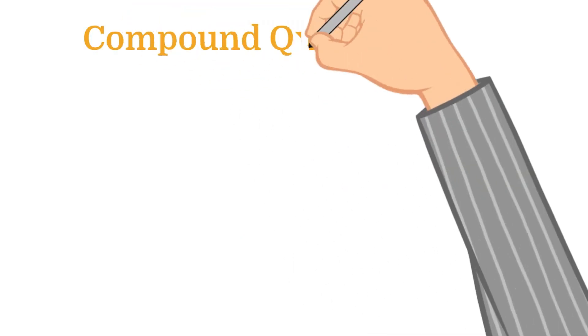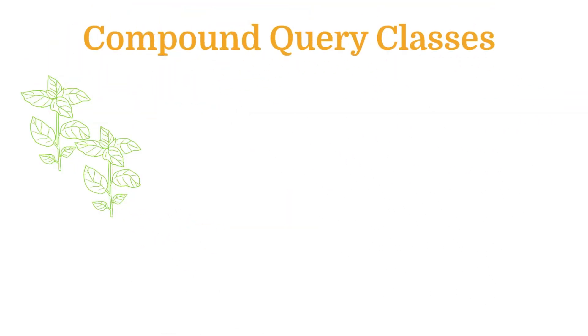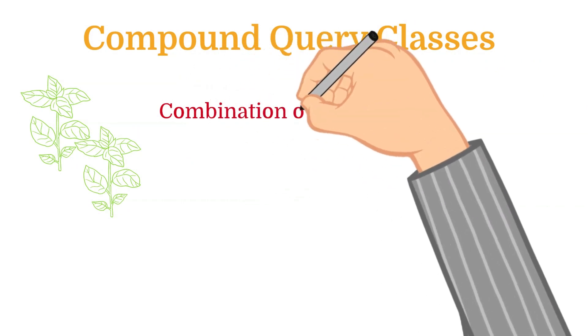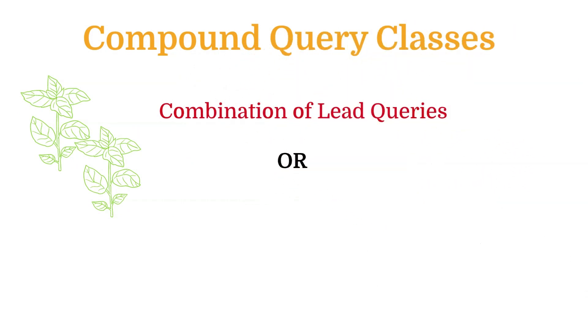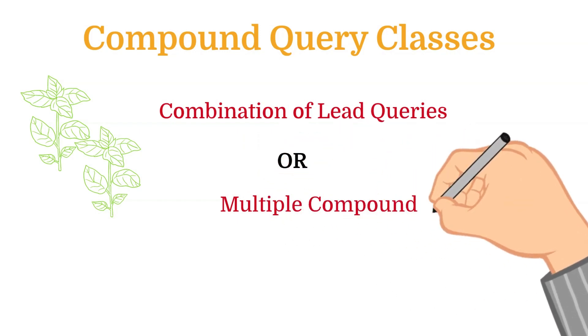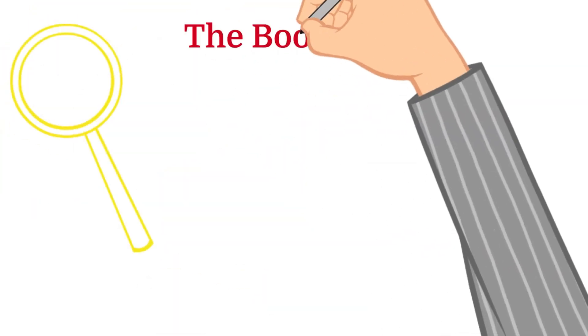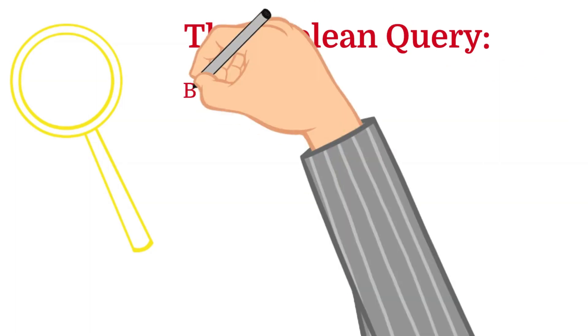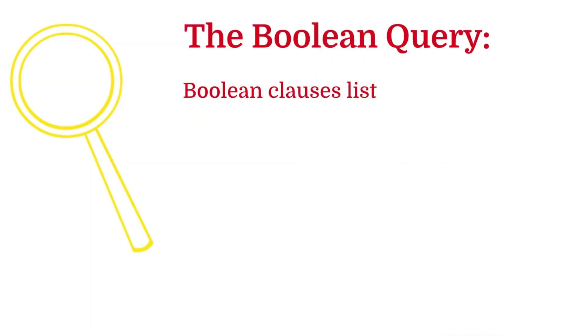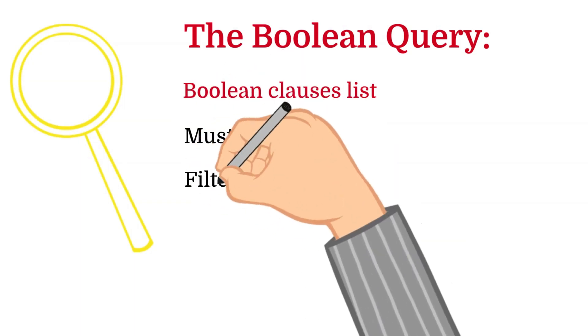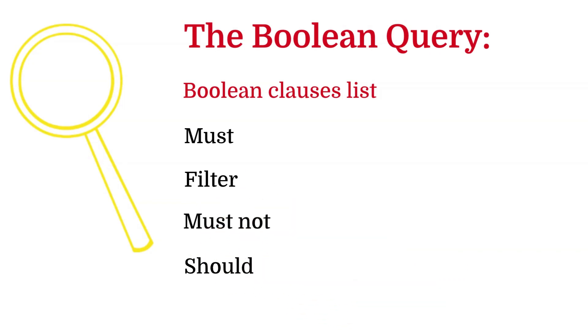Now let's move to the next topic, that is compound query classes. This is the second type of DSL query that we are covering. Compound queries are created by combining leaf queries or multiple compound queries. Let's talk about a compound query named boolean query. Previously, I gave an example of the boolean query in conjunction with the match query. This is a different boolean query. Boolean query is a combination of one or more boolean clauses.